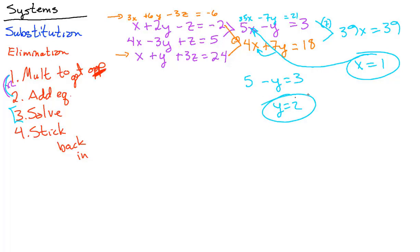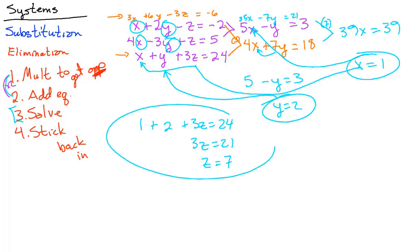Now notice, we now have to take this and this and stick it back here. So the y goes there, and this one goes to the x. So we get 1 plus 2, x plus y plus 3z equals 24. Now we could have picked to stick them in here and here, or here and here. Any of those equations with the x and the y will give us the z. So subtract 3 from both sides and we get 3z equals 21, z equals 7. Excellent. So we have x, y, z. And those are our solutions.